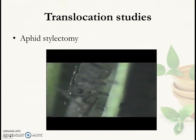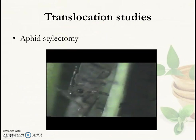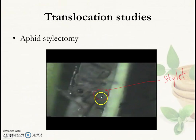Aphids have been used by plant scientists to study translocation in the phloem, using a technique called aphid stylectomy. The aphid has a special mouthpart called a stylet, which it inserts like a piercing straw into the plant and sucks out the plant juices. It so happens that the stylet is actually inserted into the phloem, because the aphid knows where the phloem is, and it starts to suck out the plant juice.